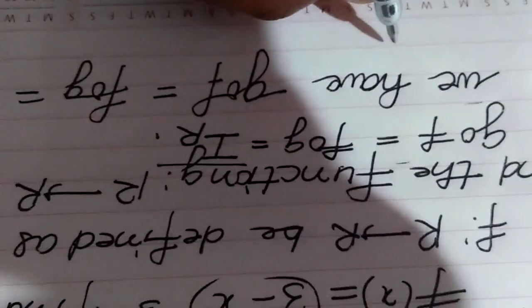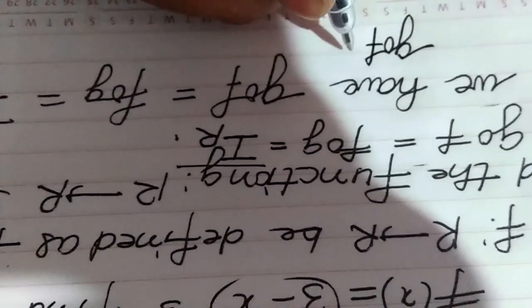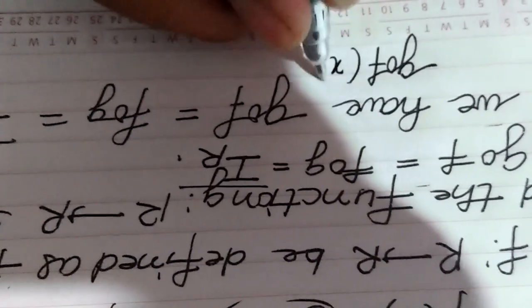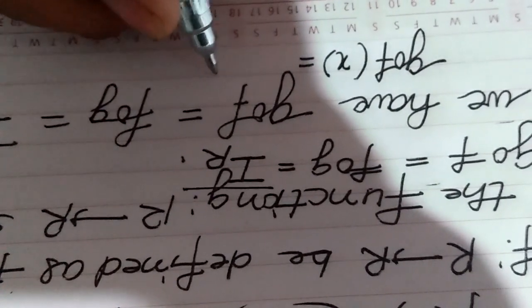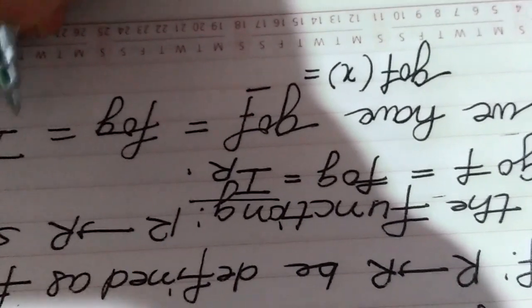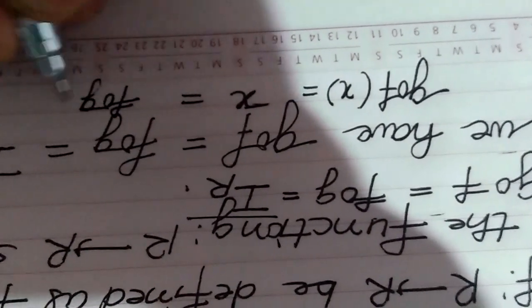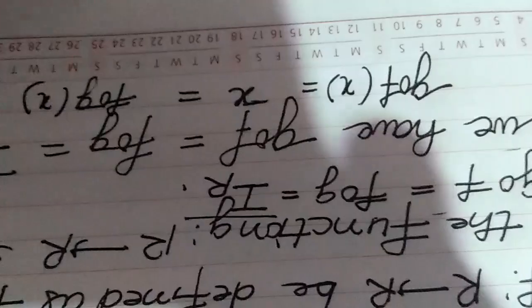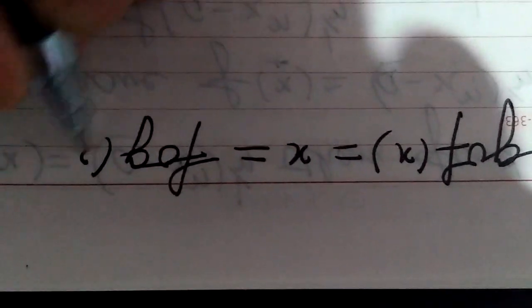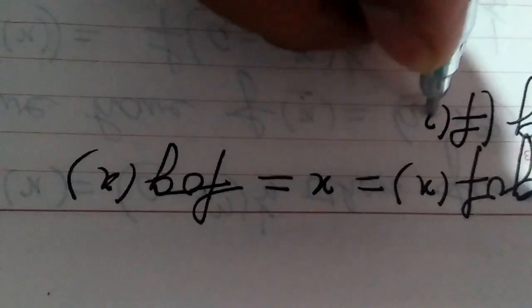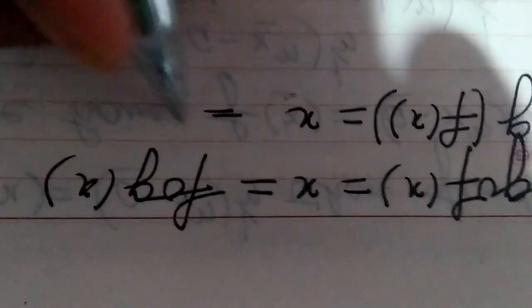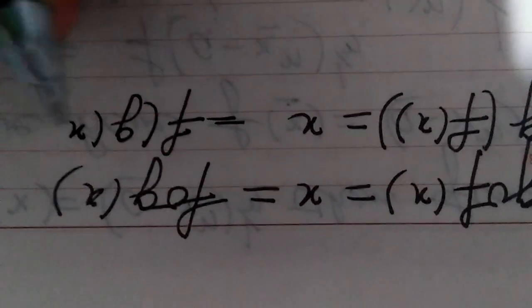We can write this as: g(f(x)) = x, since Iᵣ means the identity, i.e., Iᵣ(x) = x. So g(f(x)) = x = f(g(x)). This means g(f(x)) is equal to x, and f(g(x)) is also equal to x.